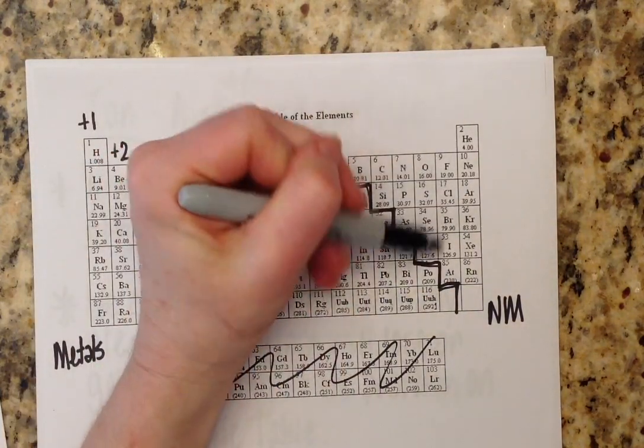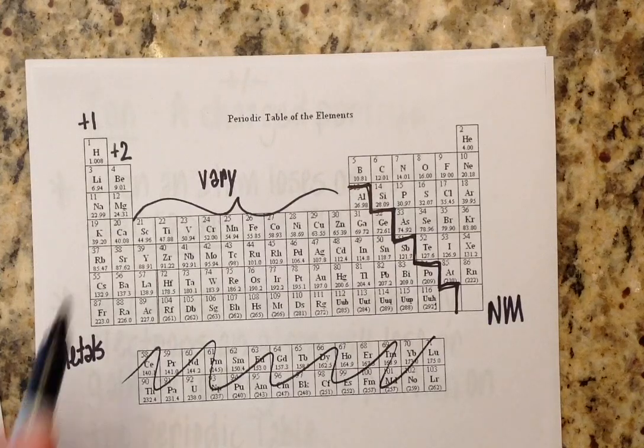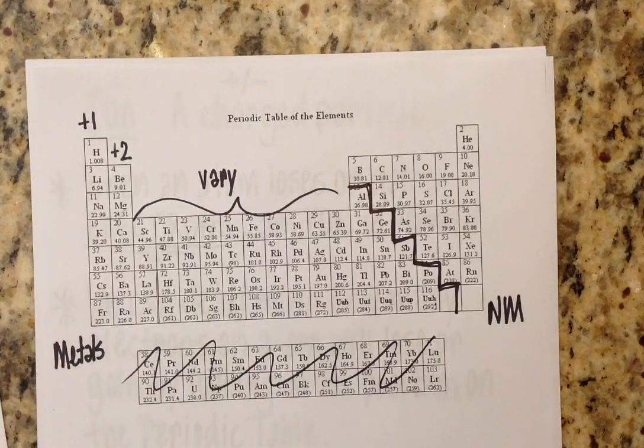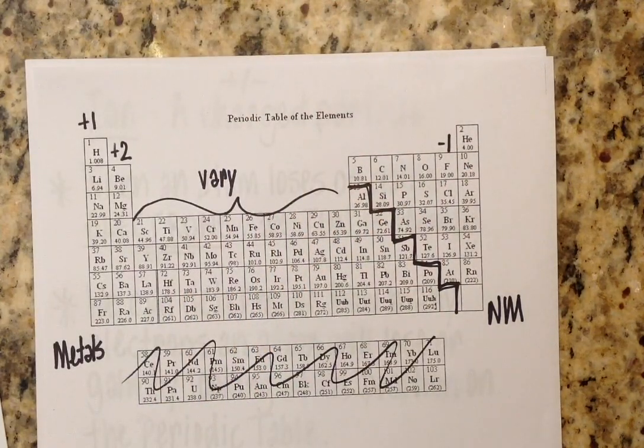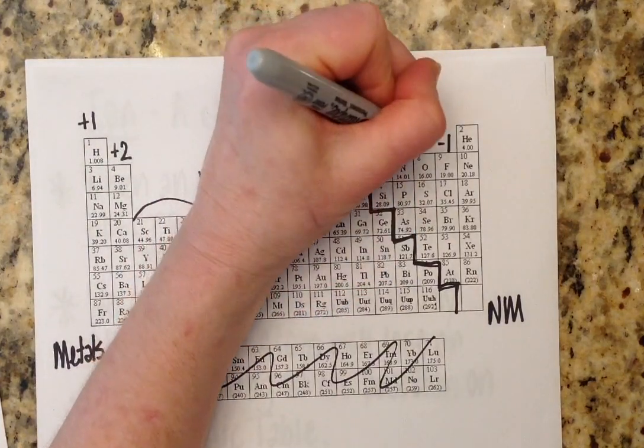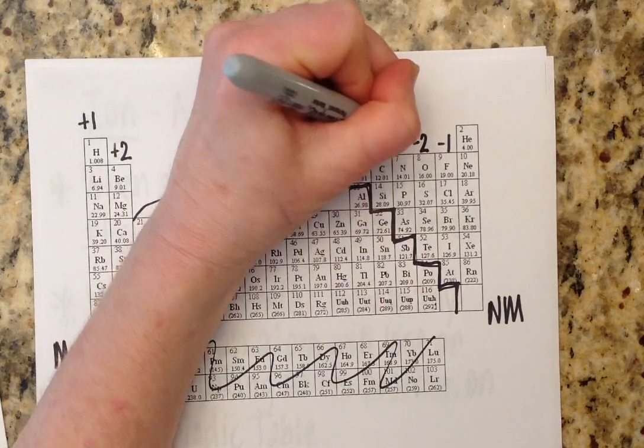So the first column we're going to look at in terms of charges are these halogens. I like to tell my students, these are the bullies of the periodic table. They're always stealing electrons. They like to come over here and steal from columns one and two. The halogens have seven valence electrons. Because of that, they know they only need one more to be perfect. They're going to do whatever they've got to do to get that electron. So when they steal one electron, they always have a charge of negative one. Likewise, this group always has a charge of negative two. And this group always has a charge of negative three.